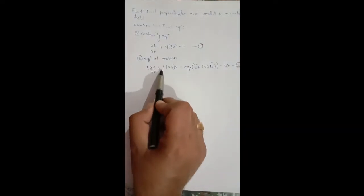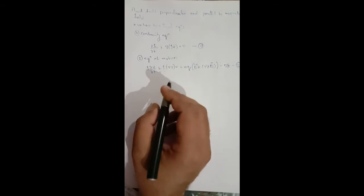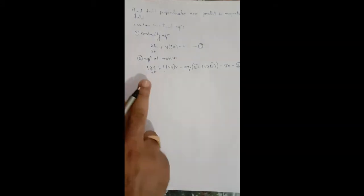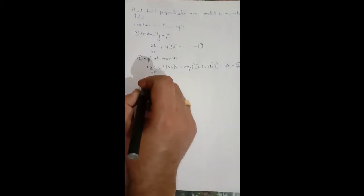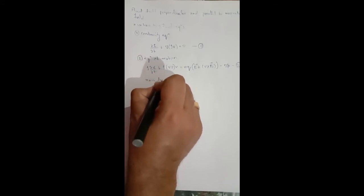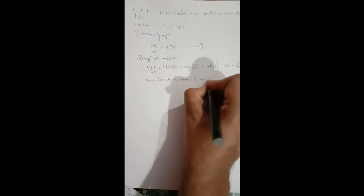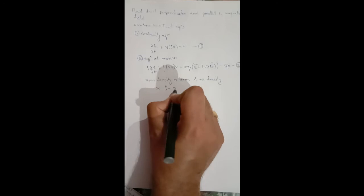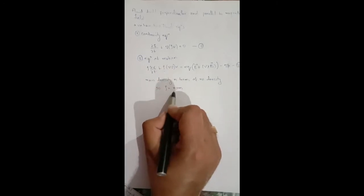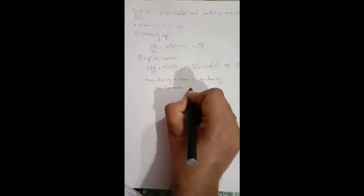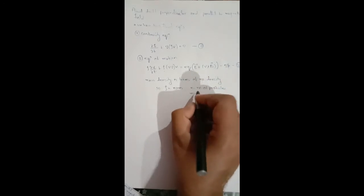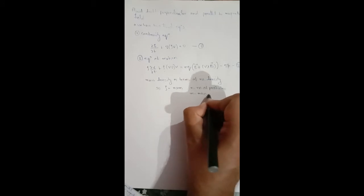Now the second equation involves density. We express mass density in terms of number density: rho is equal to n multiplied by m, where n is the number of particles and m is the mass of each particle.